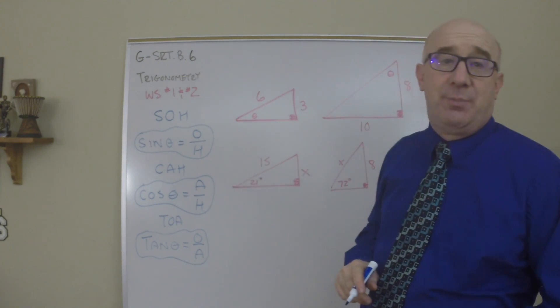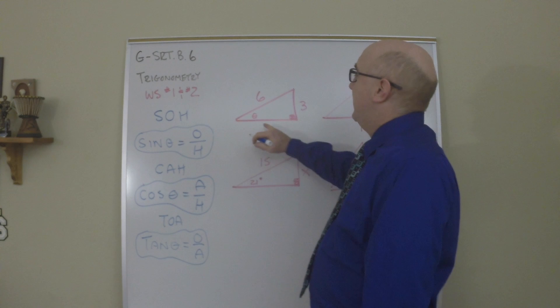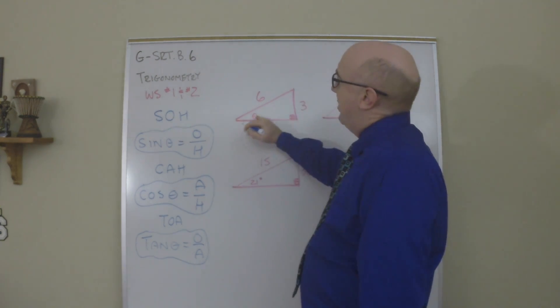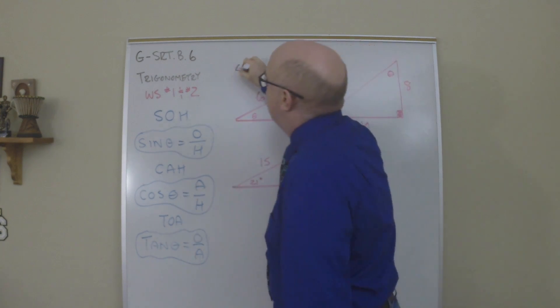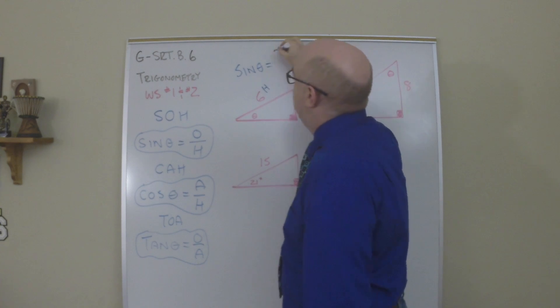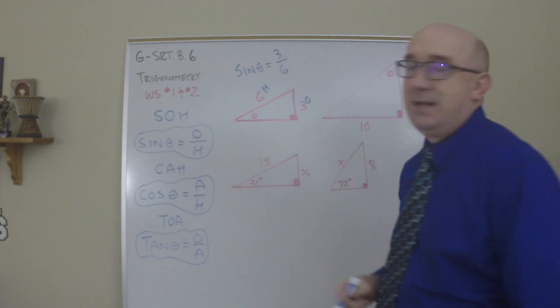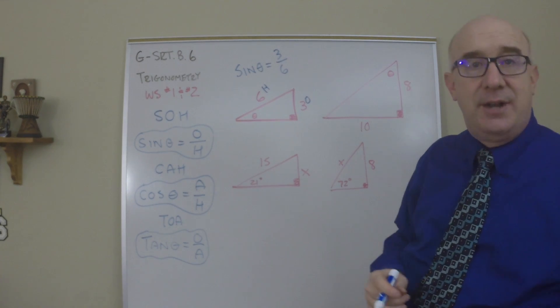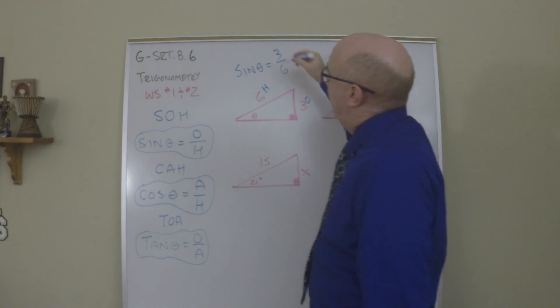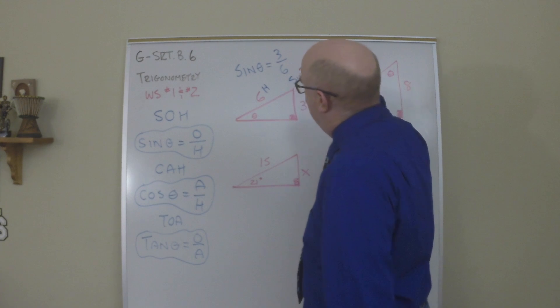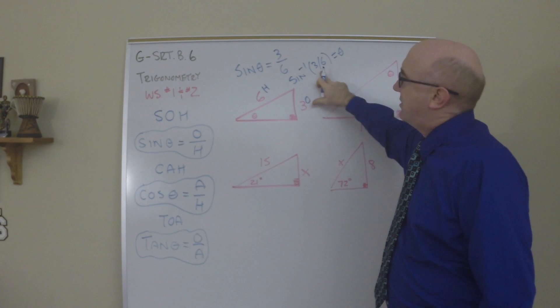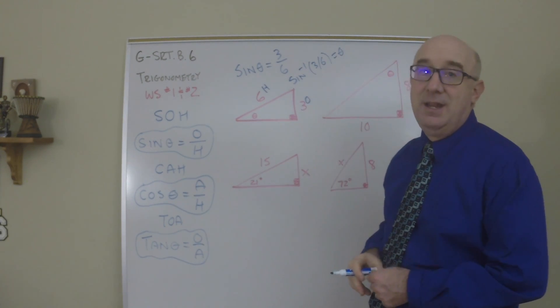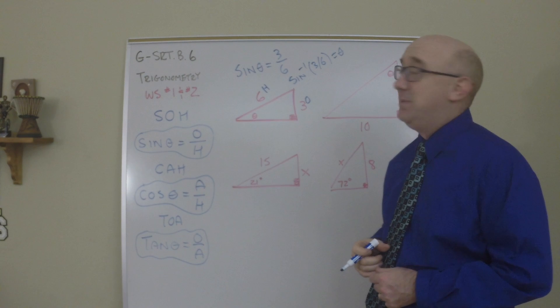Now another way to approach that is not just by memory but that this angle being our reference angle, this would be the opposite side and the hypotenuse. So the sine ratio of some unknown angle is 3 over 6, and I can put that into my calculator, and again when you find angles you always use the inverse function and that inverse function basically takes the ratio and then gives you the angle back. And you're going to find that it comes out to be 30.